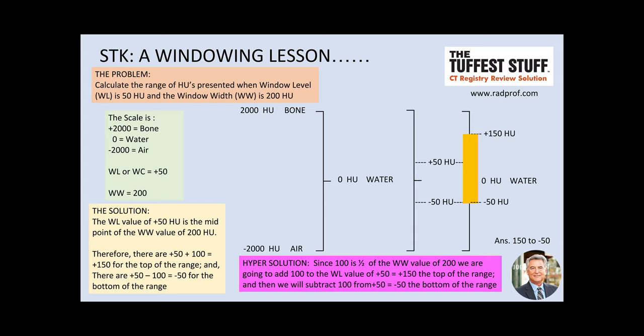Today's Some Things to Know lecture is a windowing lesson, and here's the problem. Calculate the range of Hounsfield units presented when window level is 50 and the window width is 200. It's important to note that the window level value is the midpoint of the window width value of 200.